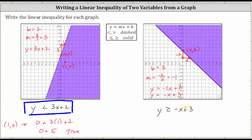Once again, let's go ahead and test this by selecting a point in the shaded region. Let's select this point here, where the ordered pair is five comma zero. Which means we substitute five for x and zero for y. This gives us zero greater than or equal to negative five plus three. Negative five plus three is negative two, giving us zero is greater than or equal to negative two, which is true, verifying we did select the correct inequality.